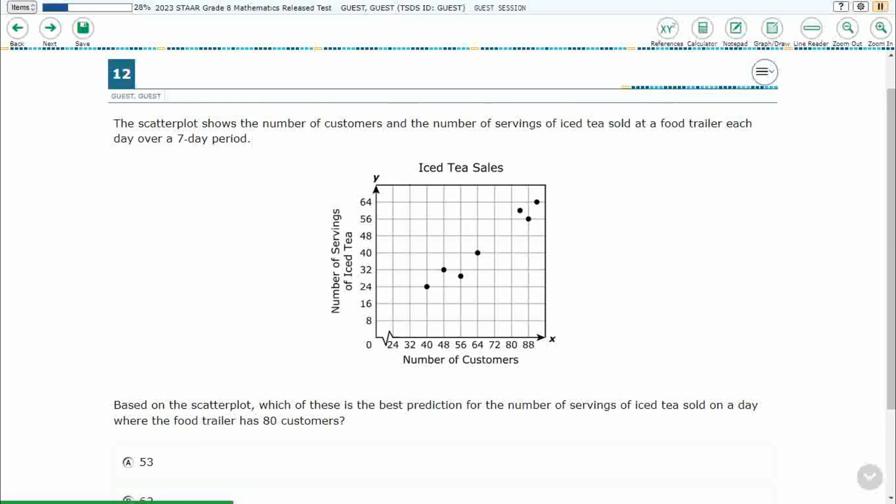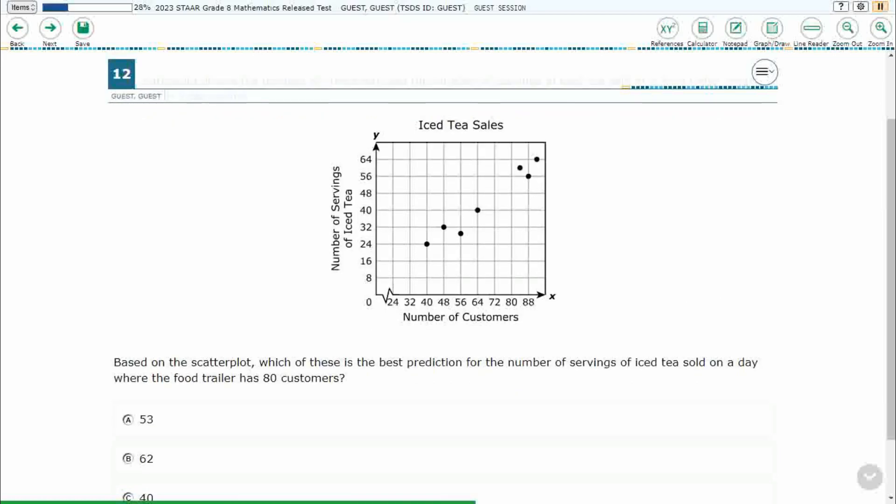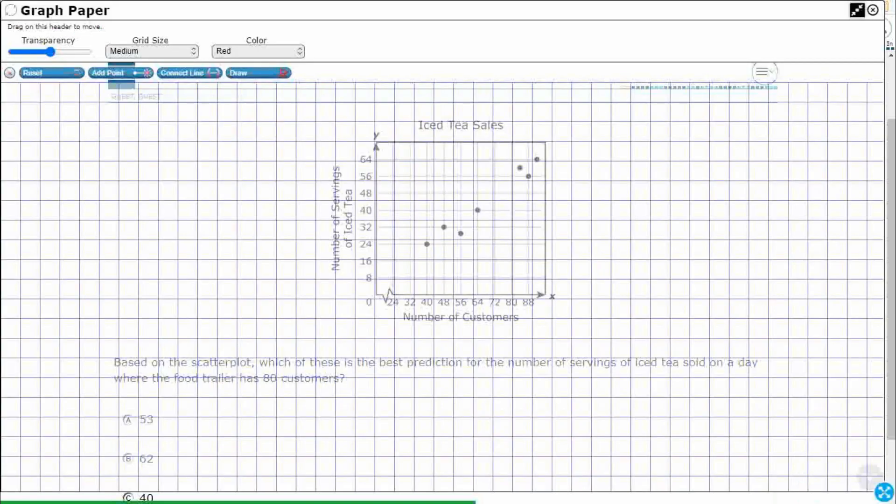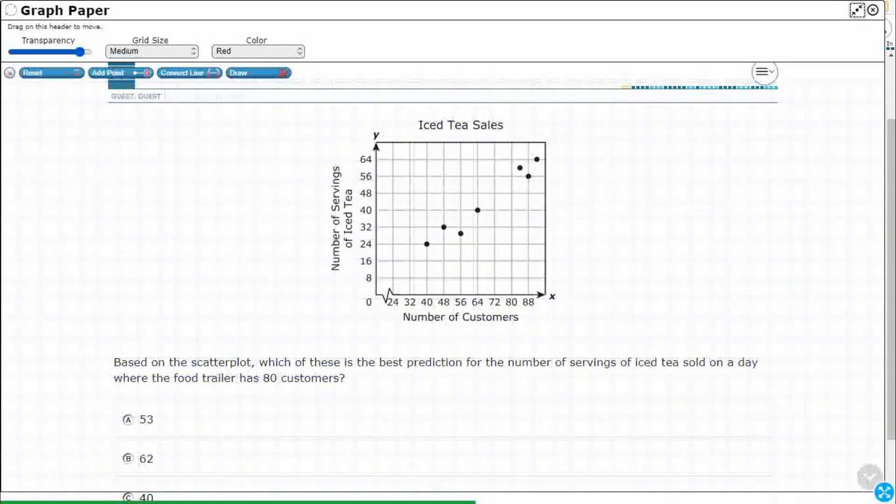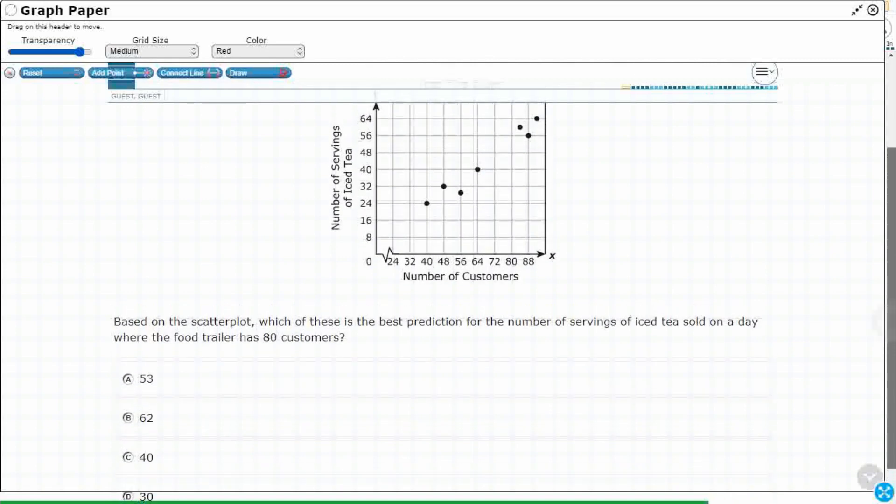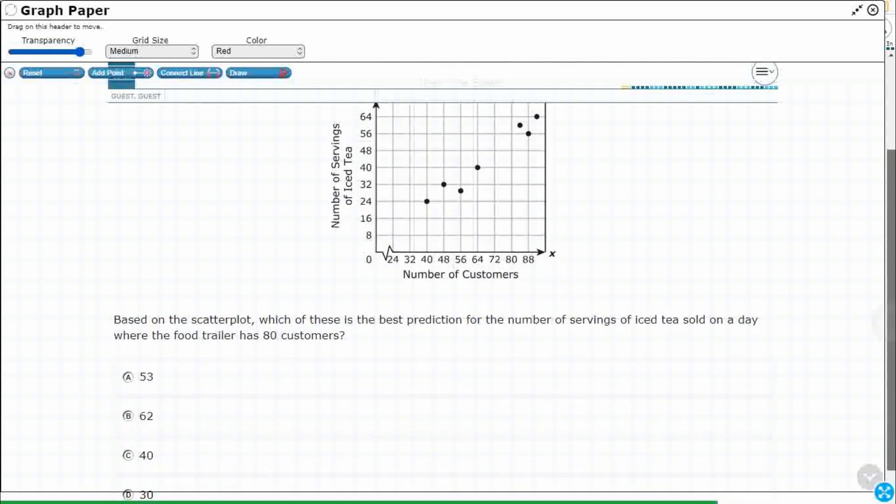So we have a scatterplot here. We've got a number of customers, a number of servings of iced tea here, and we've got a gap asking us for that 80. So this is where we see definitely an upward trajectory, and we see that it's moving up, but it's not necessarily in a straight line. What we're going to see is we're going to see a trend, so we're really looking for that trend line.